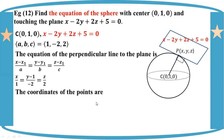The coordinates of the points are: the point is equal to H1 plus KL. So the point is equal to H1 plus KL.